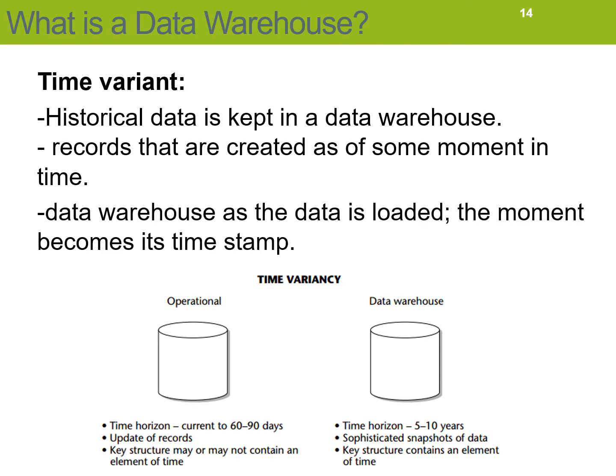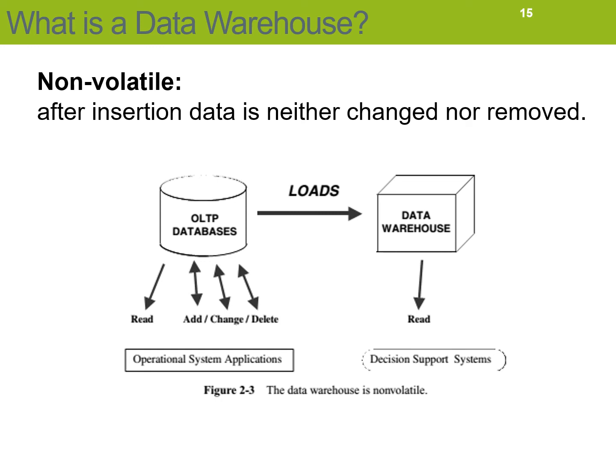Data is time-variant — records are created as of some moment in time. In OLTP systems, contents change with time; for example, your bank account balance is updated when you withdraw cash. But in the data warehouse, when data is loaded, the moment of loading usually becomes its timestamp.